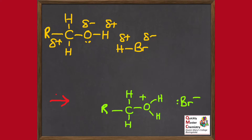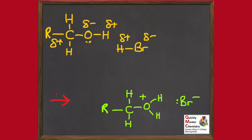There's a second thing we need to look at as well, and that's ionic charge — not the partial charges, but ionic charge. If we look at the reactants, there are no ionic charges on those molecules — just the alcohol and the hydrogen bromide, no ions. By the time we get to the products, though, we've got a positive ionic charge on the oxygen in the organic molecule and a negative ionic charge on the bromide ion.